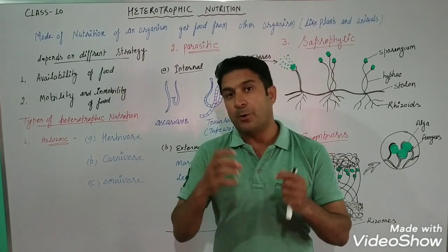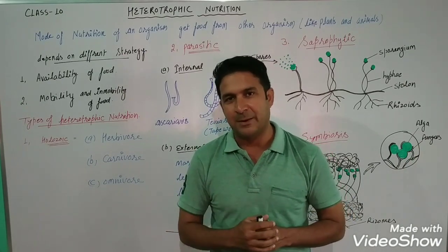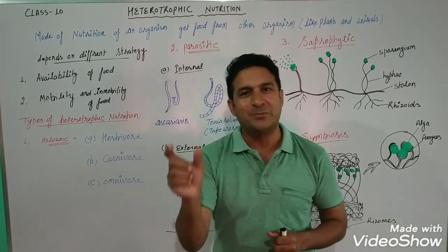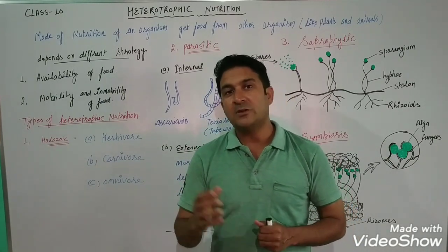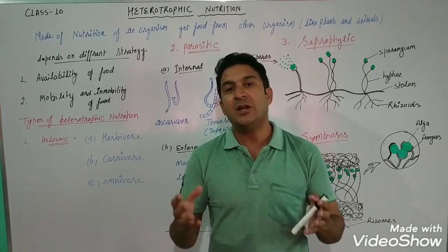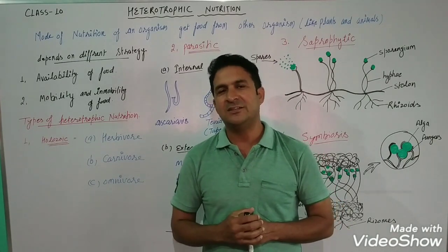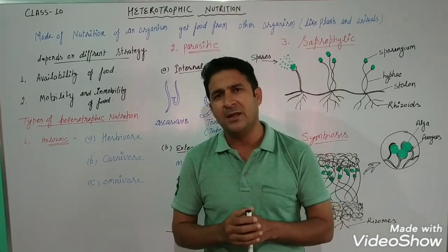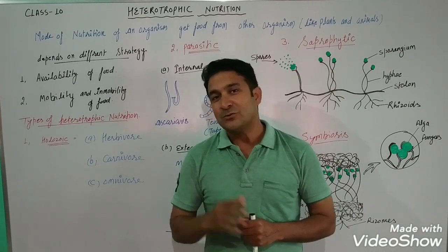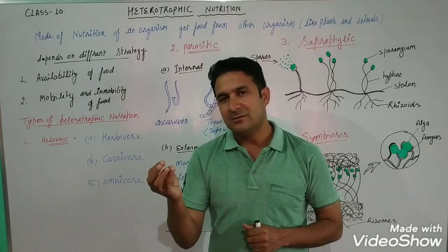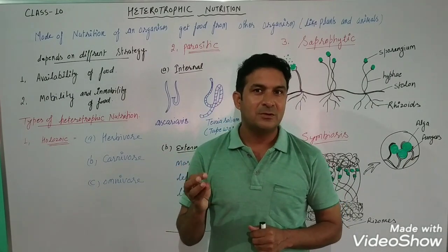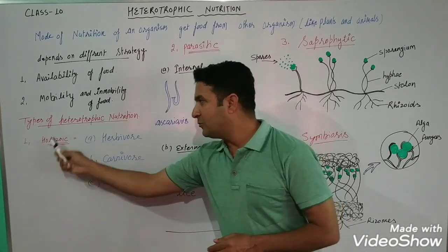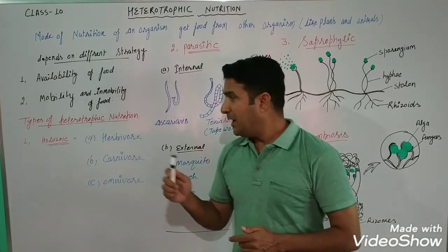After digestion, the body absorbs the digested nutrients — that is called absorption, the third step. Fourth is assimilation, which means utilization of food — the body utilizes the nutrients. At last, whatever waste material is left in the body, the body will excrete it. So the five steps are: ingestion, digestion, absorption, assimilation, and excretion.